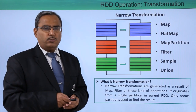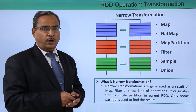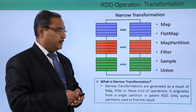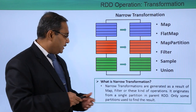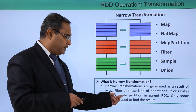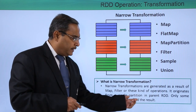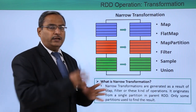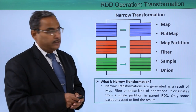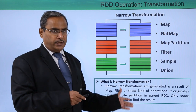Concentrating on narrow transformation, we have multiple different partitions and respective partitions will be obtained as output. Operations like map, flat map, map partition, filter, sample, and union are narrow transformations. Narrow transformations originate from a single partition in the parent RDD — they are not involving multiple partitions of the parent RDD. Only some partitions are used to find the respective result, which is why it is called narrow transformation, because all partitions do not participate in these operations.